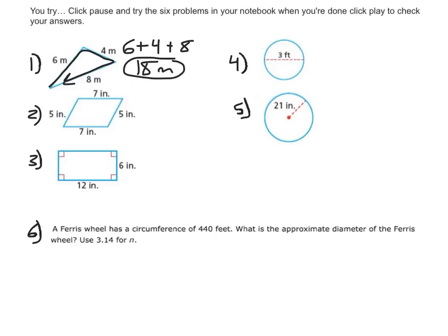For number 2, I could add up all the sides. But since 2 sides are the same, I could multiply 2 times 5 and add to that 2 times 7. Because there's 2 fives and 2 sevens, to get 10 plus 14, or 24 inches. So for number 2, the perimeter is 24 inches.